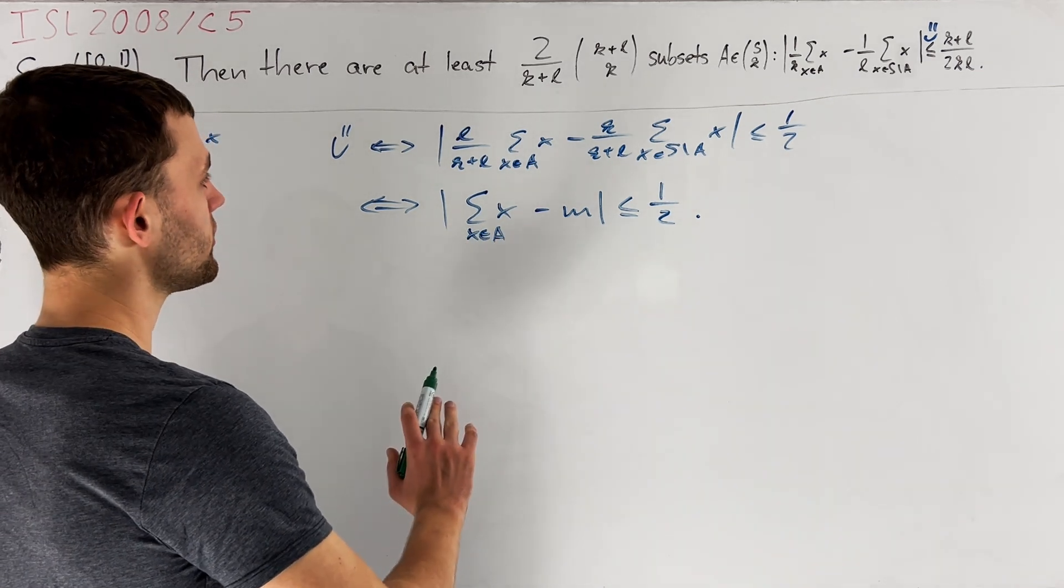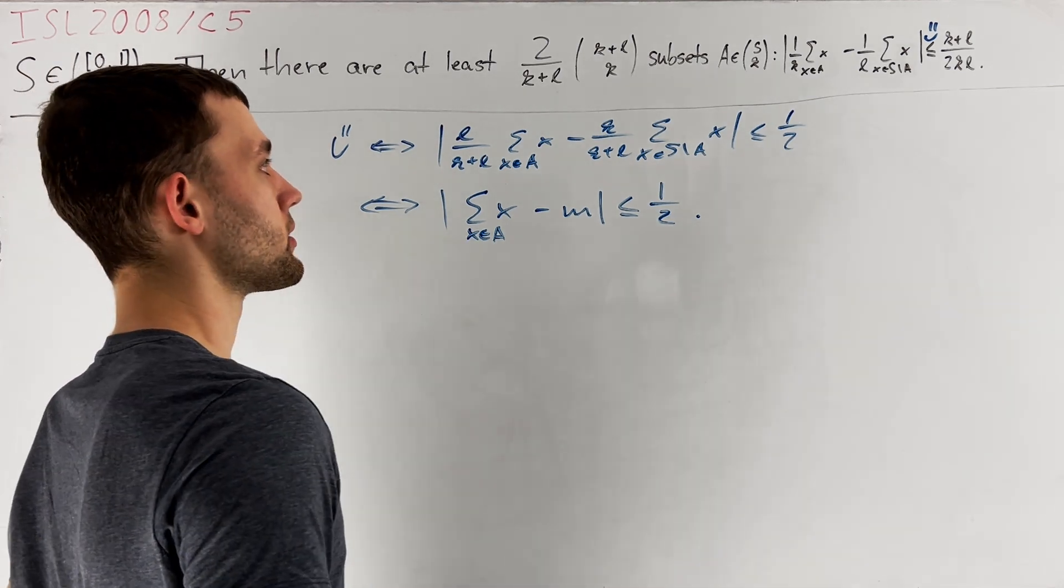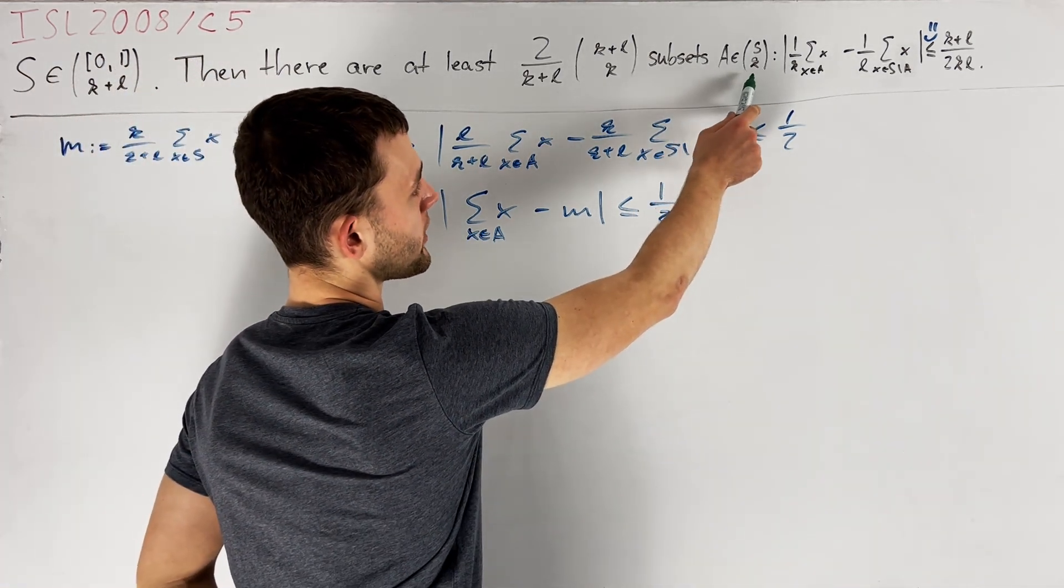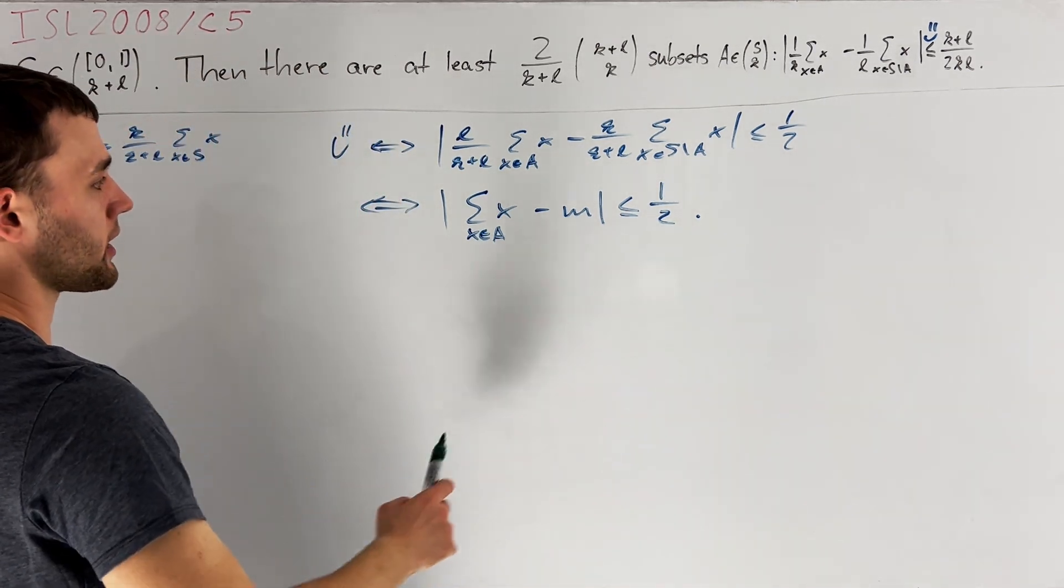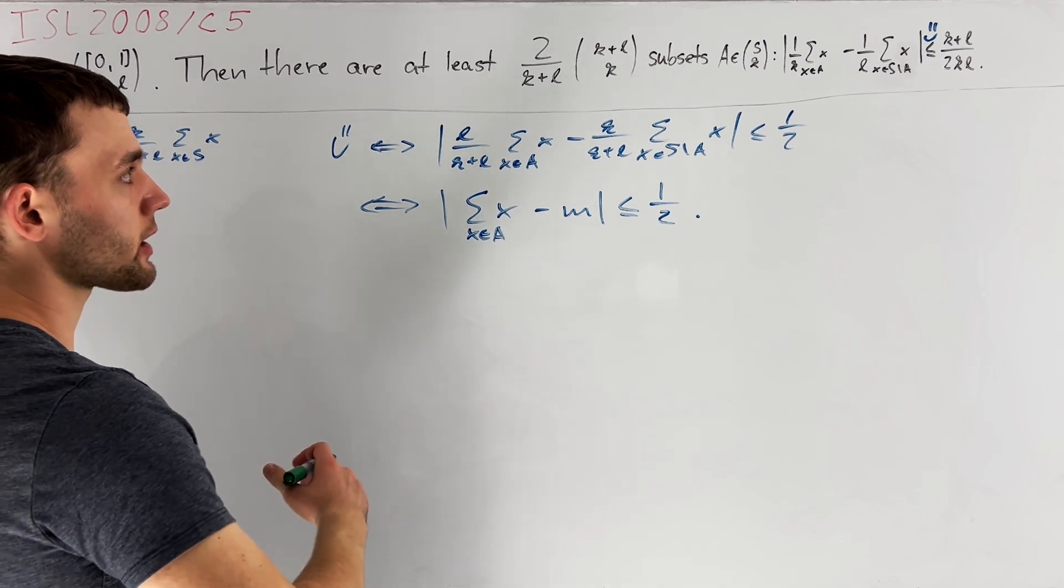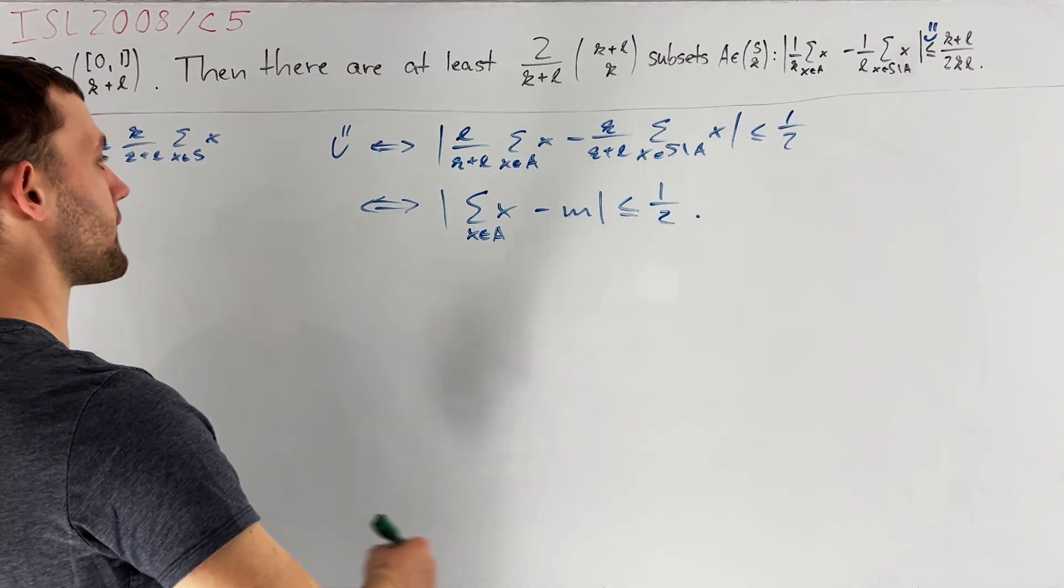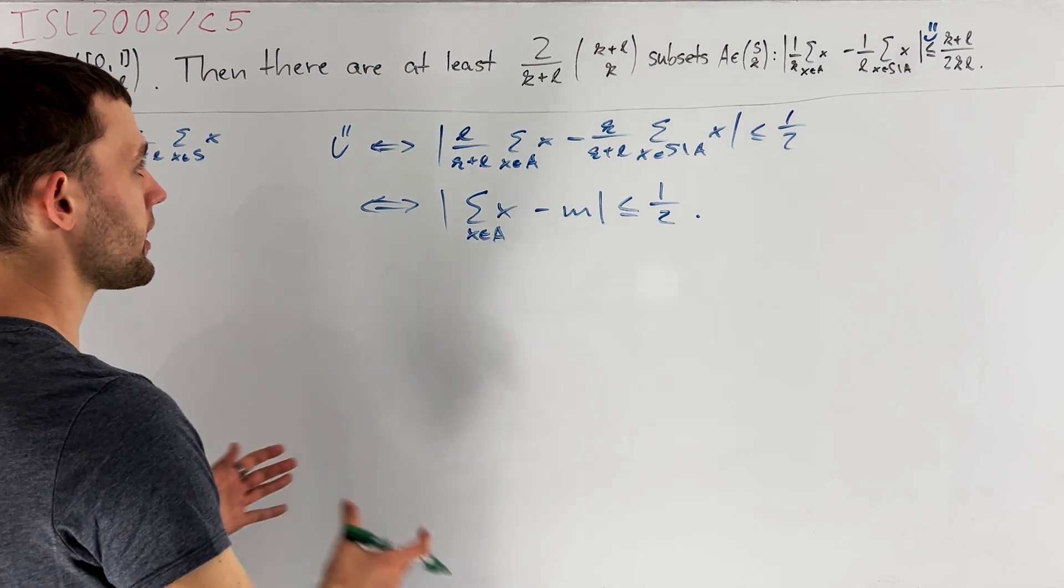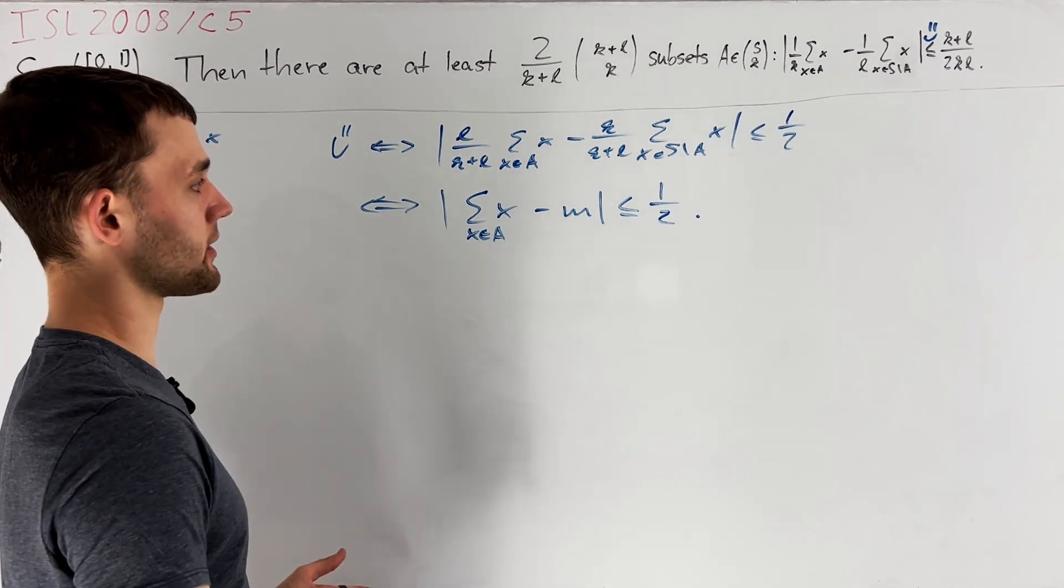We now want to show using these observations that we can construct a small sub-collection of all K-element subsets of S where we can find some A satisfying Smiley or this property. If this construction of our sub-collection is sufficiently symmetric and if our bounds are sufficiently good, then this will already be enough to finish the problem by an averaging argument as we will see later.